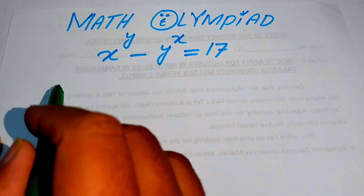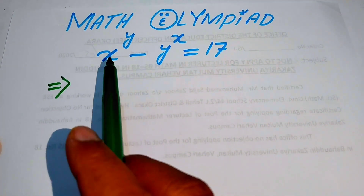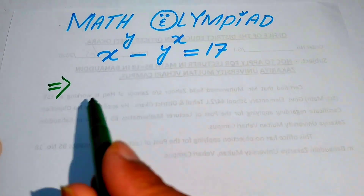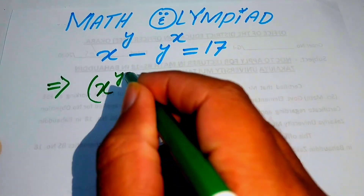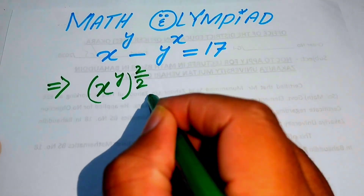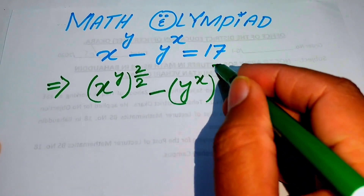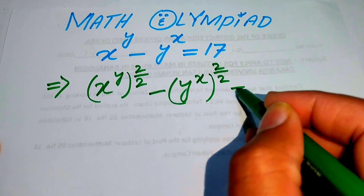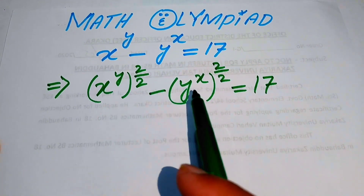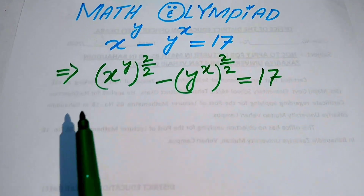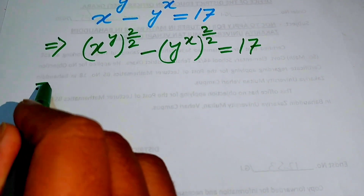The very first step is to multiply and divide the exponent of both terms by 2. We write x to the power of y as x to the power of y whole power 2 by 2, and y to the power of x as y to the power of x whole power 2 by 2, and this equals 17. We use a nice exponential law to further solve this problem.